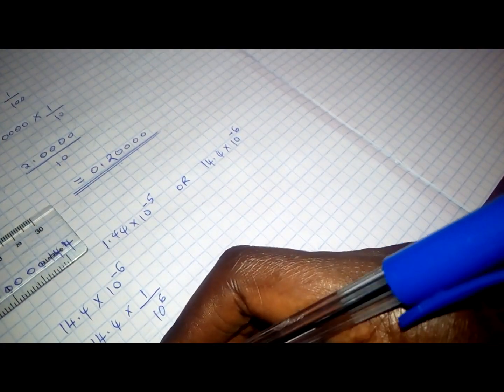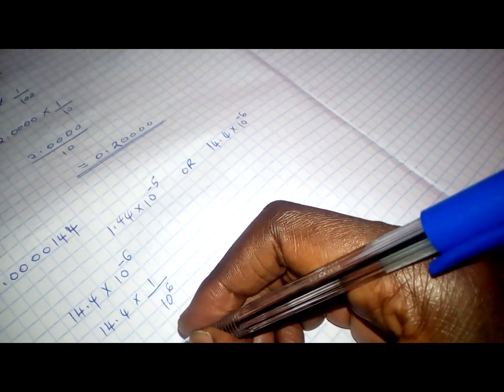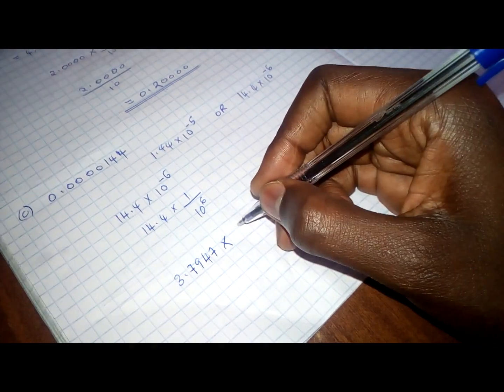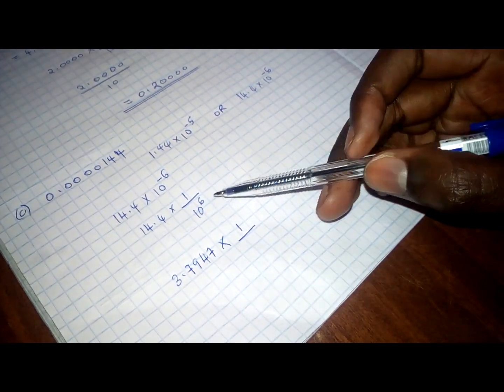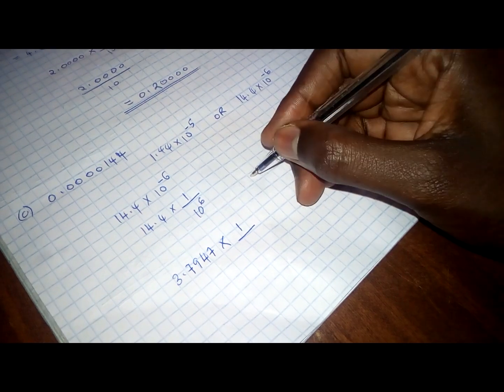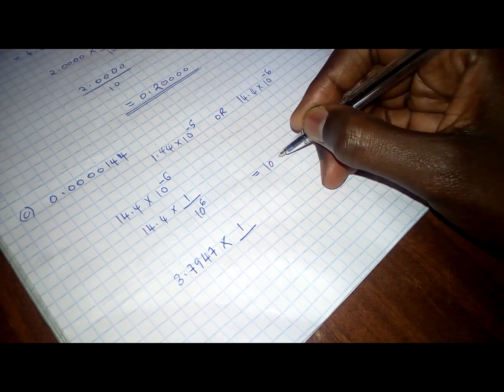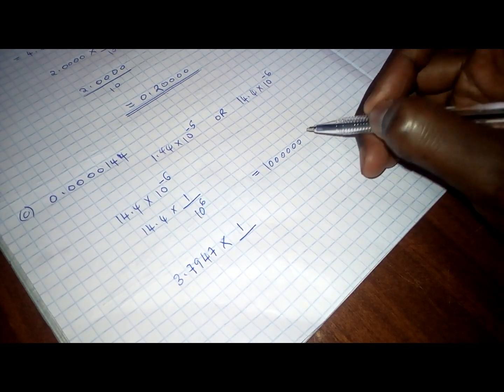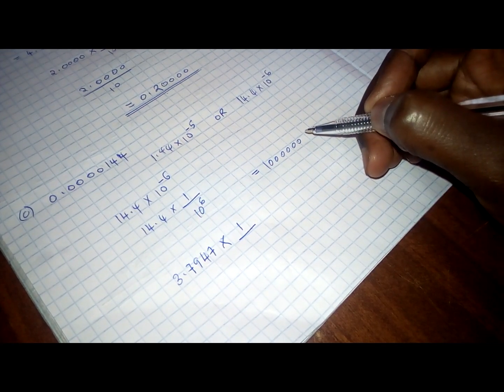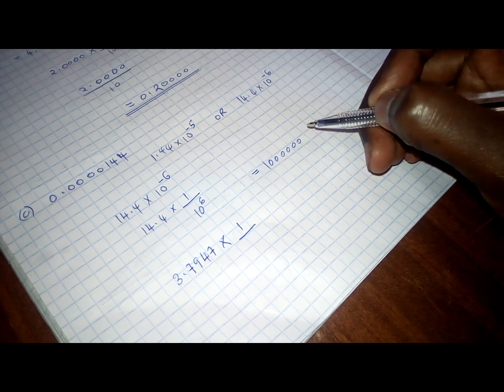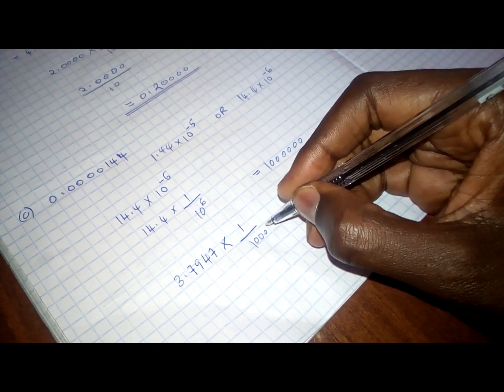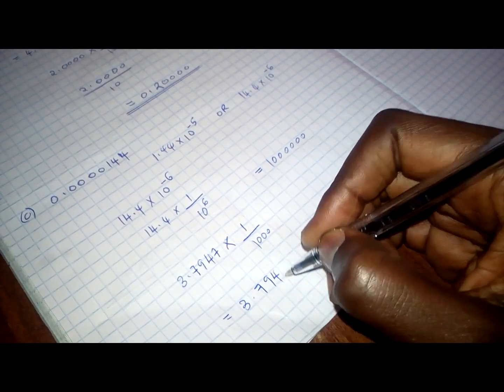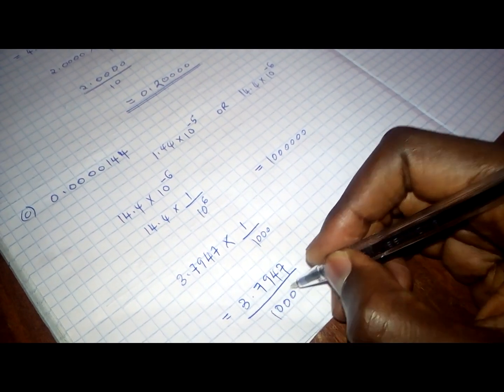So, the square root of that is 3.7947 times. The square root of 1 is 1. The square root of 10 to power 6. Remember, 10 to power 6 is just the same as having 6 zeros: 1, 2, 3, 4, 5, 6. So, it's a million. And the square root of a million is 1,000. So, this is 1,000 is 3 zeros. So, this is just the same as 3.7947 over 1,000.